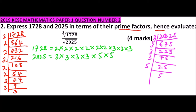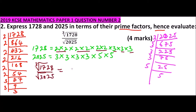Now we simplify the expression. The cube root of 1728: grouping the prime factors in threes gives 2 × 2 × 3 = 12. Wait — grouping gives us 4 × 3. The square root of 2025: grouping in pairs gives 3 × 3 × 5 × 5, so square root = 9 × 5 = 45. The expression becomes (4 × 3) ÷ (9 × 5). Simplifying by 3 gives 4 ÷ 15.